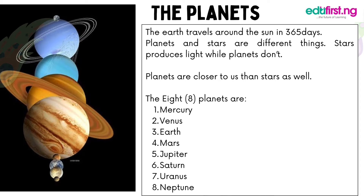The earth travels around the sun in 365 days. Planets are closer to us than stars. There are eight planets in our solar system and they are Mercury, Venus, Earth, Mars, Jupiter, Saturn, Uranus and Neptune.